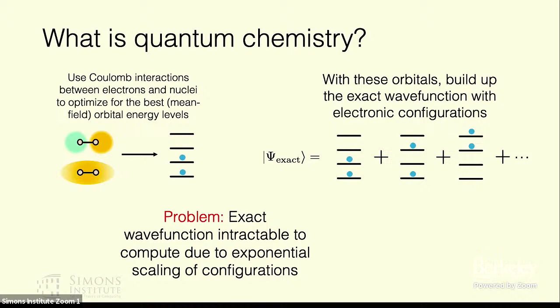If we can use the Coulombic interaction to build up a Hamiltonian between the electrons and nuclei and optimize for some mean field, get a set of orbitals for some system, this is typically what's done in standard quantum chemistry calculations. But in order to build up the exact wave function, we need basically all configurations of electrons in these orbitals and this ends up being an exponentially scaling problem which of course is intractable.